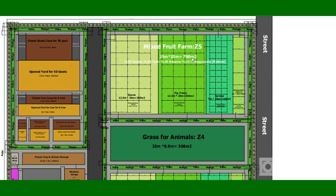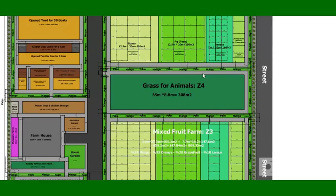Zone five is mixed fruit: 35 percent guava, 35 percent fig — called 'teen' in Arabic — 20 percent banana trees, and 10 percent pomegranate trees. So that is guava, fig, banana, and pomegranate in zone five.